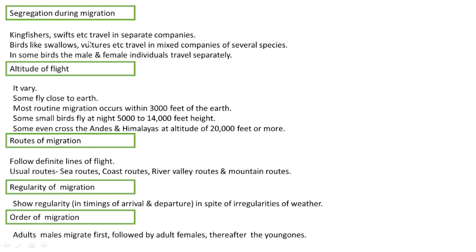Regarding segregation during migration: kingfishers travel in separate companies, while swallows and vultures travel in mixed companies of several species. In some birds, male and female individuals travel separately. Regarding altitude of flight, most birds fly close to the ground, while routine migration occurs at about 3,000 feet. At night, some birds fly 5,000 to 14,000 feet high, and some even cross the Alps and Himalayas at altitudes of 20,000 feet or more.